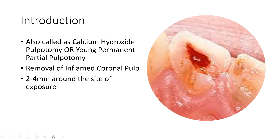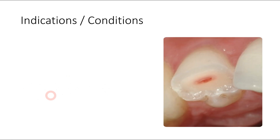As you can see in this case, this is traumatic pulpal injury and there is exposure of pulp, so we will only remove about 2 to 4 mm of pulp around the site of exposure. Svex pulpotomy is a special pulpotomy that requires certain conditions — certain indications which mandate its performance. There are certain conditions which must be fulfilled before we actually go for Svex pulpotomy.